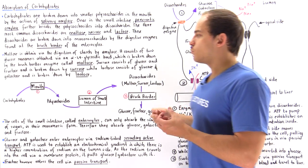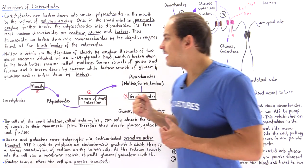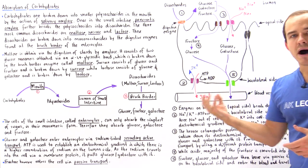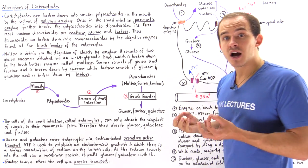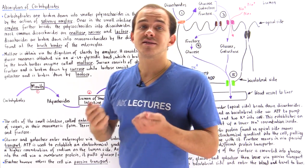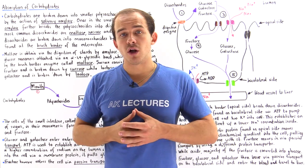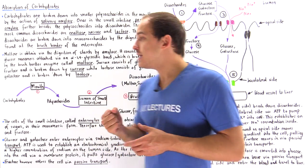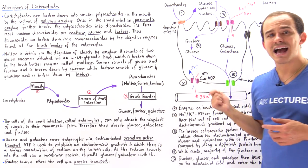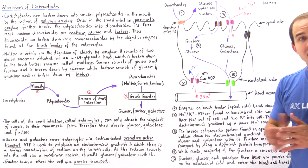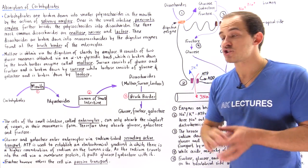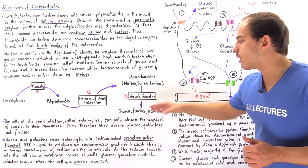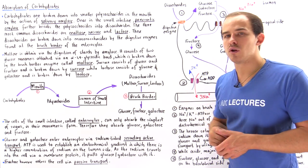The reason we have to break down the carbohydrates ultimately into their individual monomeric constituents is because the enterocytes — the cells of the small intestine — can only absorb these monomers. They cannot absorb disaccharides because they're simply too big, so we have to break down the disaccharides into our individual monomers.